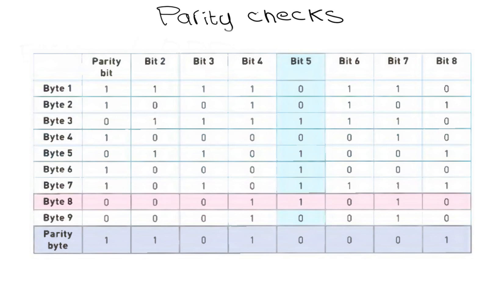Another byte, known as a parity byte, has also been sent. This byte consists entirely of the parity bits produced by the vertical parity check. The parity byte also indicates the end of the block of data. This table shows how the data arrived at the receiving end. It is now necessary to check the parity of each byte horizontally, bytes 1 to 9, and vertically, columns 1 to 8.